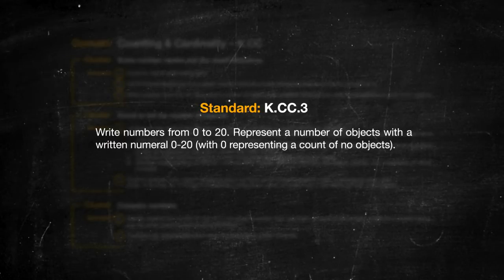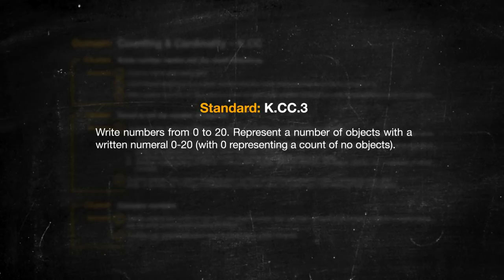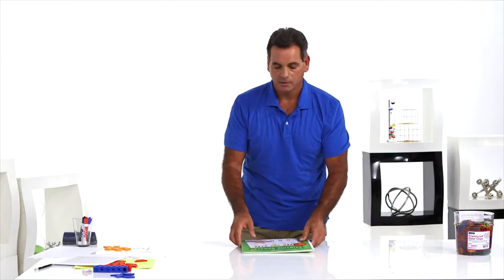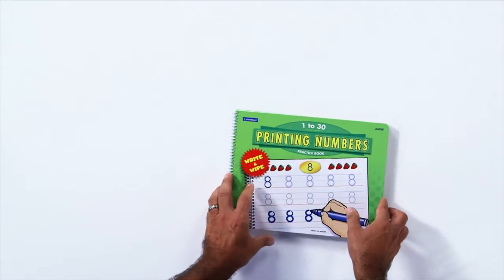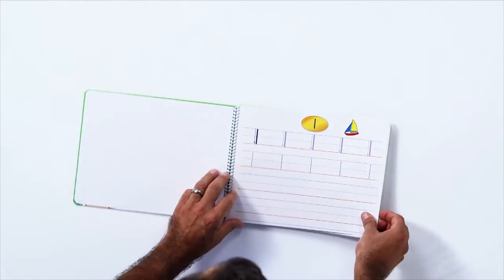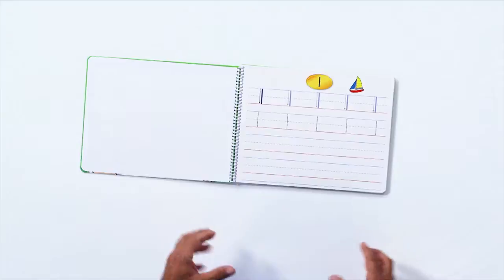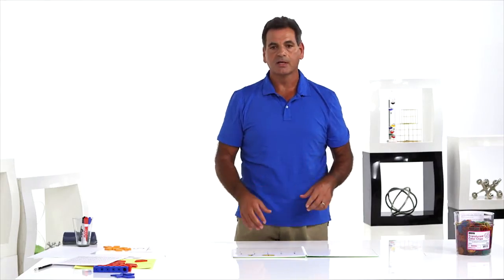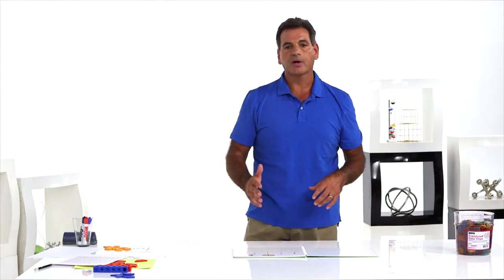In this standard, the students will count a number of objects and write the numeral that represents the number of objects. What has to happen first is formal instruction of writing numbers — it doesn't happen all the time, and it's really important because we want the kids to be writing numbers consistently from grade to grade.